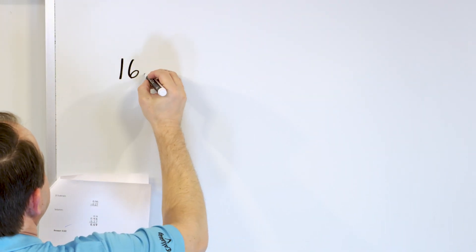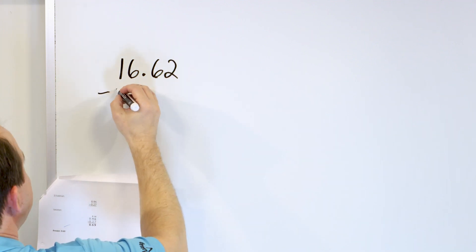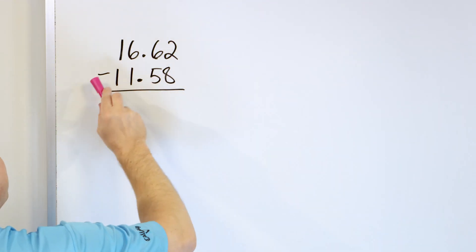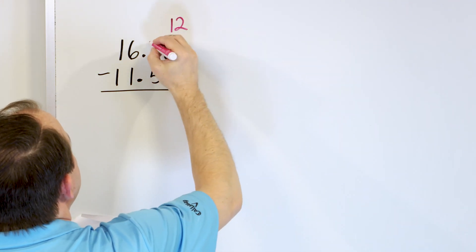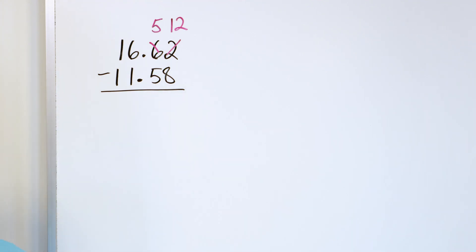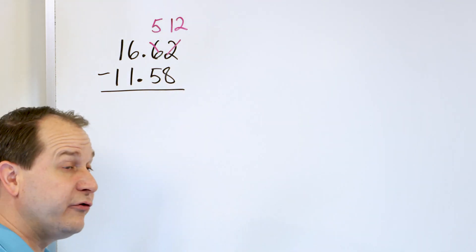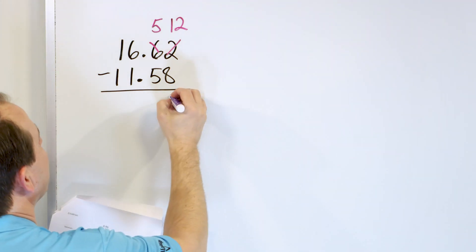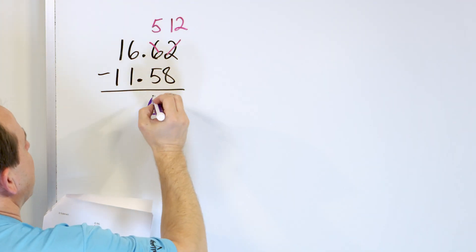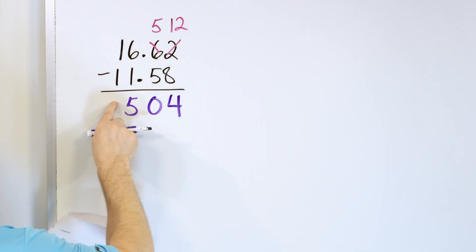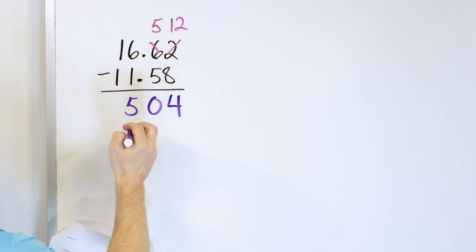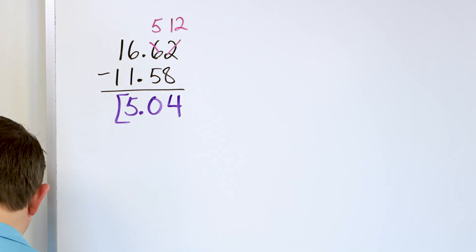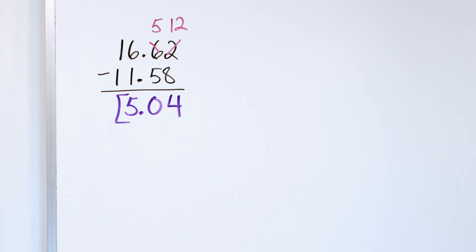All right, next problem. What about 16.62? And we subtract from that 11.58. Start in the right column: 2 minus 8 — we can't do that because 2 is not large enough. Make it 12, borrow, making this a 5. 12 minus 8: start at 12 and go down — 11, 10, 9, 8, 7, 6, 5, 4. We land on 4. 5 minus 5 is 0. 6 minus 1 is 5. And 1 minus 1 is 0, but we don't need to write leading zeros. The decimal drops right out of the problem: 5.04.